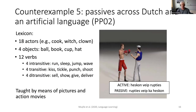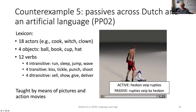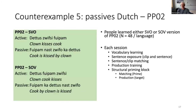We taught participants this language using pictures and action movies to introduce vocabulary — for instance, little action clips of a boxer hitting a sailor. They learned through vocabulary exposure, sentence-clip matching, production training, and then crucially a structural priming block.